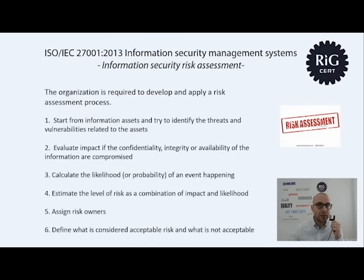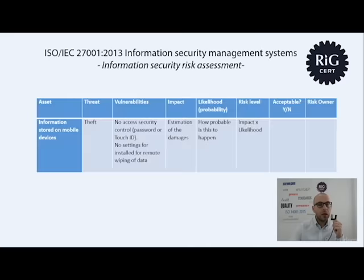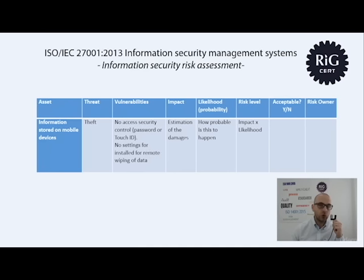You have to have criteria stating that risks above a certain level are not acceptable, and risks under that level are considered acceptable. As an example: the information stored on mobile devices is an information asset. One threat is theft. The vulnerabilities are that there is no security access control to the mobile device — no password or touch ID.